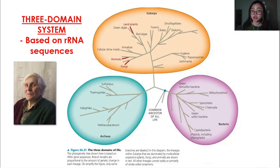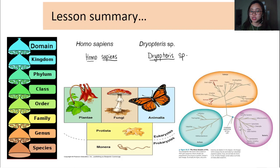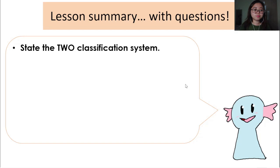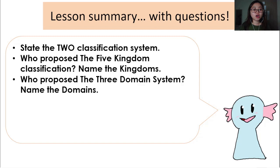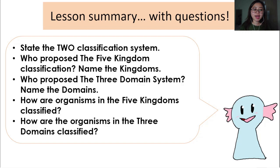So that is it for the three domain system, and that is it for 1.1. Very quick lesson summary: these are the eight taxons; this is how you write scientific names according to binomial nomenclature; you learned about the five kingdom system and also the three domain system. Try to answer each of these questions on your own: State the two classification systems. Who proposed the five kingdom system classification? Name the kingdoms. Who proposed the three domain system? Name the domains. How are the organisms in the five kingdoms classified? And how are the organisms in the three domains classified?